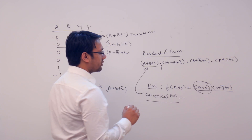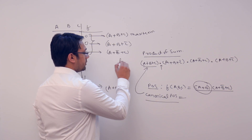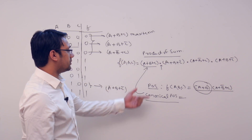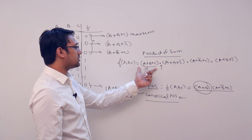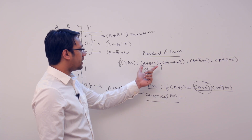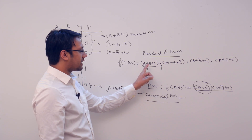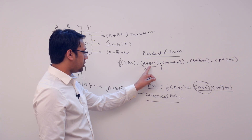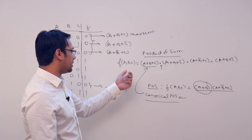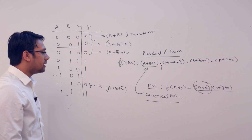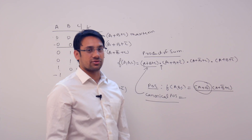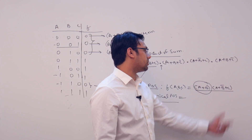In case of canonical product of sum, if the function is of three variables, every max term should assume a value 0 for exactly one combination of input variables, and all the three variables should be there in every max term. For example, here in the function we have three variables, therefore all the three variables should be in max terms — all three variables should be present in each max term.